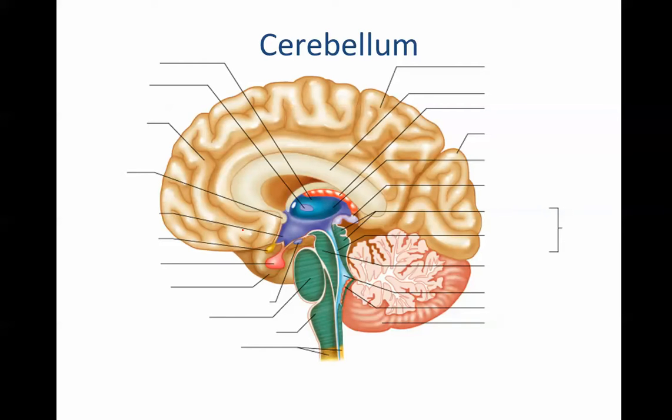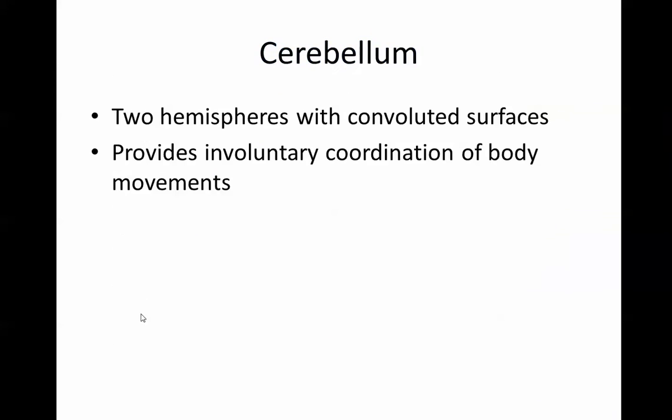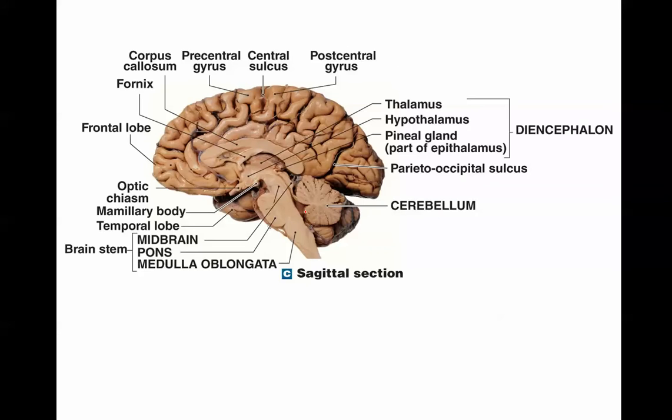And lastly, cerebellum. In the old days, we used to say cerebrum, medulla oblongata, cerebellum. But now we realize it's much more complicated. And that's why we have the six regions. So there's the cerebellum. And the two hemispheres, involuntary coordination and body movements. So that pretty much is your video. And we've gone through the major regions, the six regions, and the little subcategories. And again, pause the video. I'd watch it again. So thanks for watching.